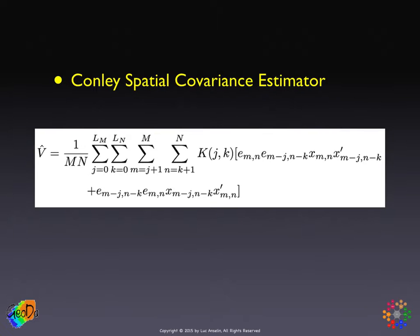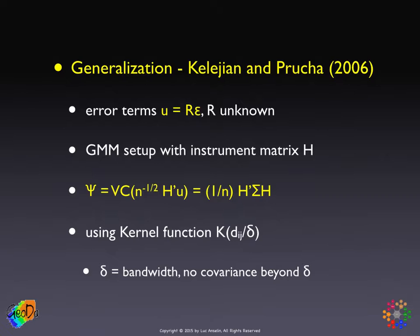In around 2006, Collegian and Prucha generalized this approach in two respects. First, they went beyond the OLS setup to a very generalized setup with spatial lags, potentially endogenous variables, and everything else, which requires the use of instruments in a weighted two-stage least squares approach. The variance-covariance matrix has a similar structure, but now the cross-products pertain to the matrix of instruments H. In the standard regression case, H is simply X.